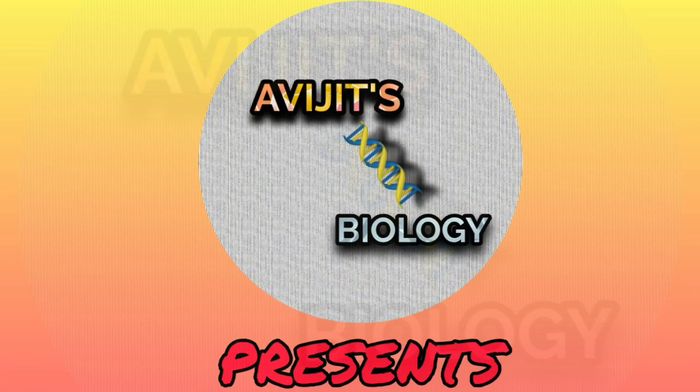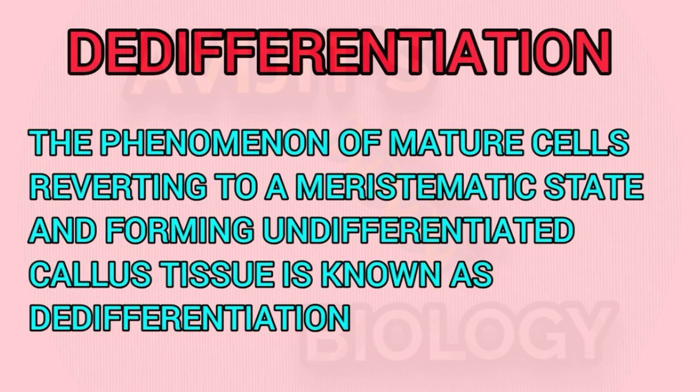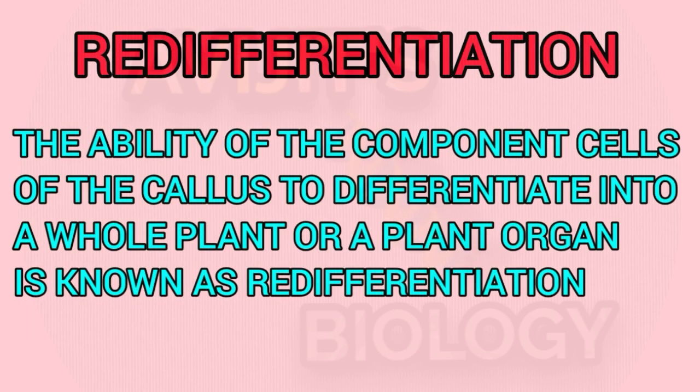Welcome to a new video of Which is Biology. In this video I am going to discuss about the different types of plant tissue culture and some related terms like dedifferentiation, redifferentiation, callus, etc. First of all, what is dedifferentiation? The phenomenon of mature cells reverting to a meristematic state and forming undifferentiated callus tissue is termed as dedifferentiation. In short, a differentiated cell reverting to an undifferentiated state is termed as dedifferentiation.